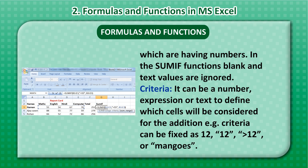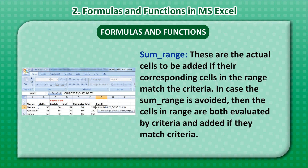Criteria can be a number, expression, or text that defines which cells will be considered for addition. For example, criteria can be set as 12, "12", "<12", or "Mangos". Sum Range refers to the actual cells to be added if their corresponding cells in the range match the criteria. If sum range is omitted, the cells in range are both evaluated by and added if they match the criteria.